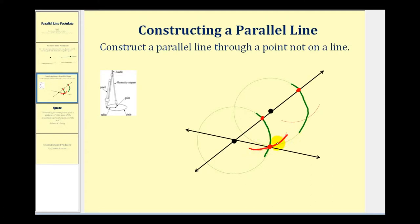Then take the point of the protractor and put it on the other point of intersection with this green arc here, and swing an arc that intersects the green arc, something like this. Now we'll construct a line that passes through this point here and the intersection of these two arcs. This will be the line that's parallel to the given line and passes through the given point.